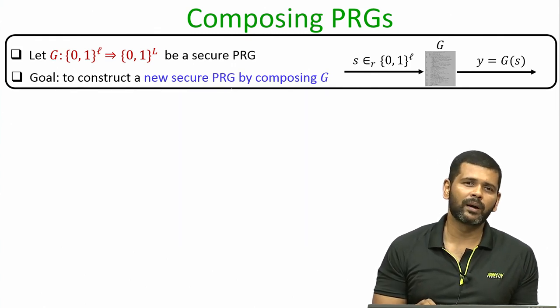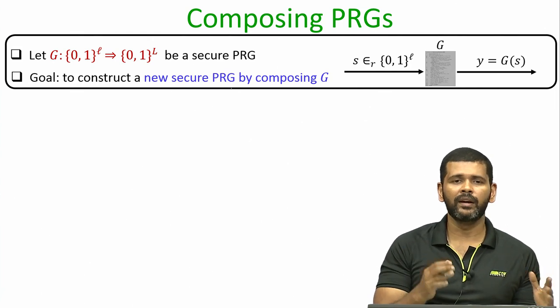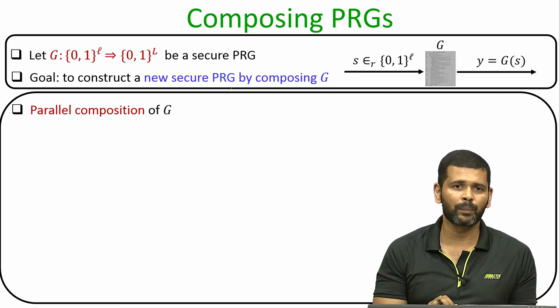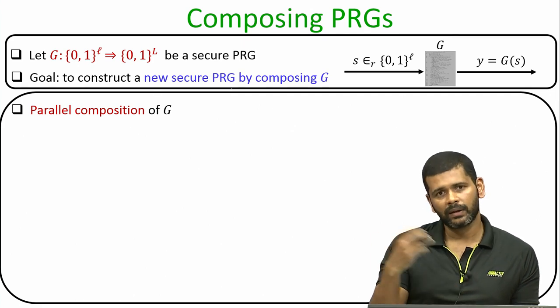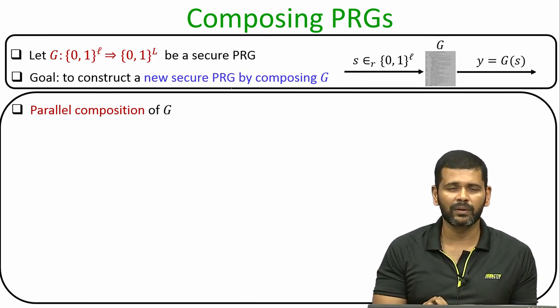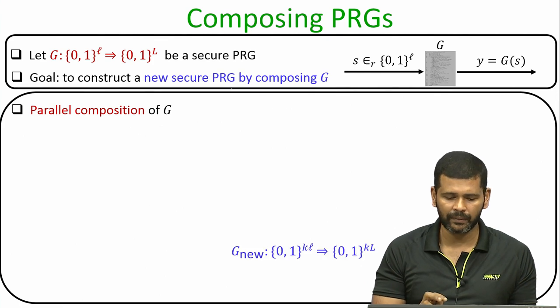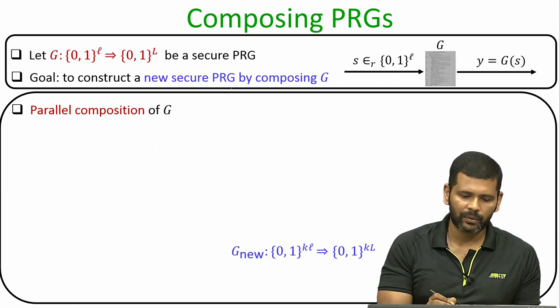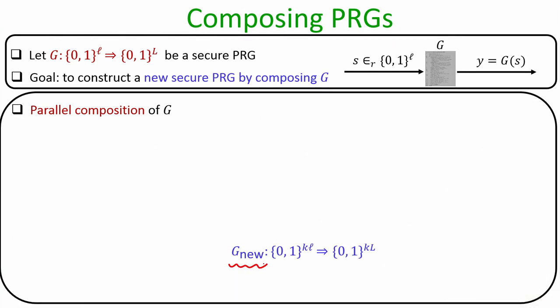Our goal is to compose many independent executions of the algorithm G. Here we consider the parallel composition of G; in future discussion we will also consider the serial composition. By doing the parallel composition, our goal is to design a new random number generator G_new which takes an input of size k·l bits and produces an output of size k times big L bits.